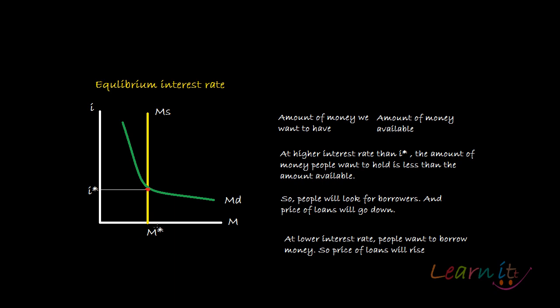That is the equilibrium quantity of money — the quantity at which the demand for money equals the supply for money. At this equilibrium interest rate, the amount of money we want to have, that is the amount we are demanding, is equal to the amount of money available in the economy. Note that the money supply is fixed in this economy.